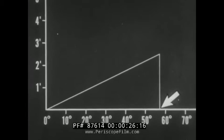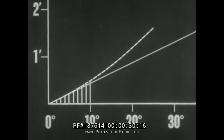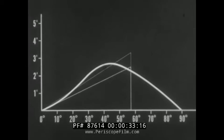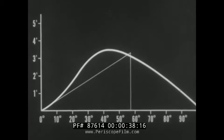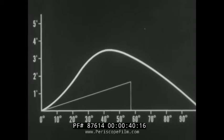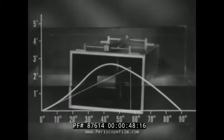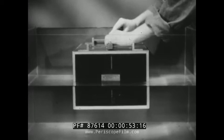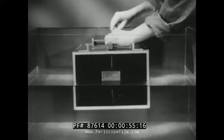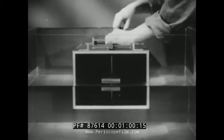We have seen that the metacentric height can be used as a measure of initial stability. We also have seen that changes in GM affect the entire stability curve. In this pontoon, for example, a change in the position of G changes not only the initial stability but the range of stability as well.